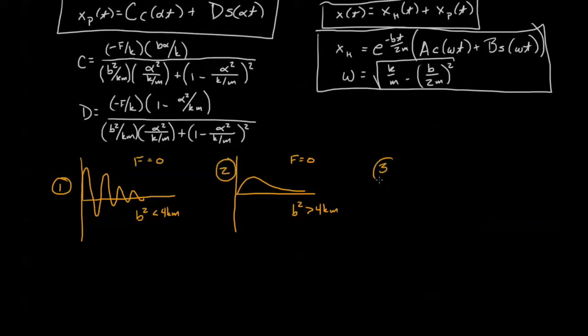And our third unforced scenario is critically damped. We know that to be F equals zero, and B squared equals 4km. And that one might look a little bit like this. Notice that it comes closest to equilibrium faster than it would here.